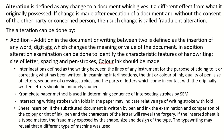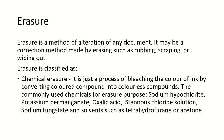The chromicotte paper method is used in determining the sequence of intersecting strokes using a scanning electron microscope. Intersecting writing strokes with folds in the paper may indicate the relative age of the writing stroke — if writing is done after folding the paper, there will be feathering or slight spreading of ink at the folds. Sheet insertion involves adding another sheet. Erasure is another method of document alteration by rubbing, scraping, or wiping out, and is classified as chemical or physical.